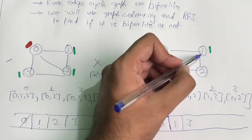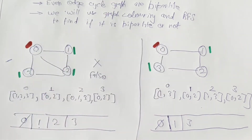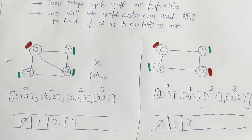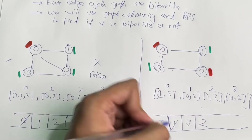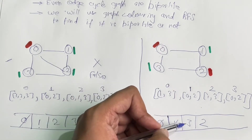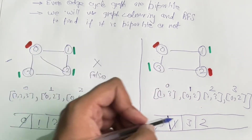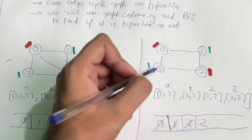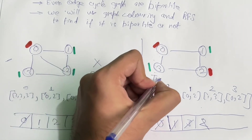For node 1, its neighbors are 0 and 2. Node 0 is already colored and opposite — that's okay. Node 2 is not colored, so we color it the opposite of 1, which is red, and push it into the queue. For node 3, neighbors 0 and 2 are already colored and opposite, so nothing to do. For node 2, all neighbors are already colored and opposite. All nodes are processed with no color conflict, so it is a bipartite graph — we return true.